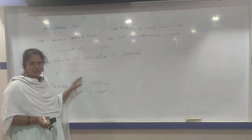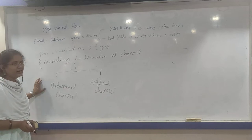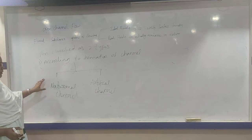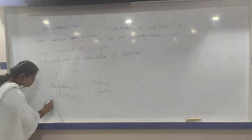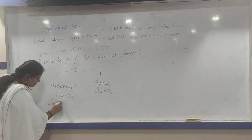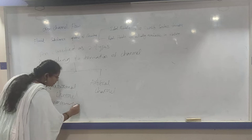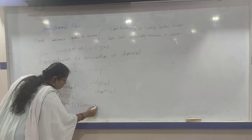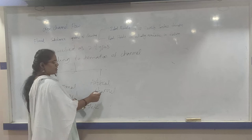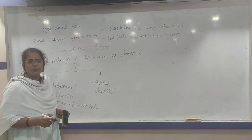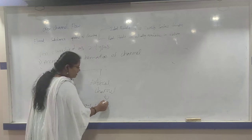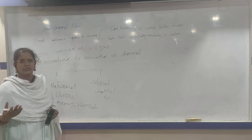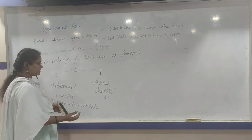Coming to natural channel: natural channel is formed naturally. For example, streams, rivers, etc. Coming to artificial channel: these are channels made by humans for various purposes, like irrigation purpose, drinking water purpose, etc.